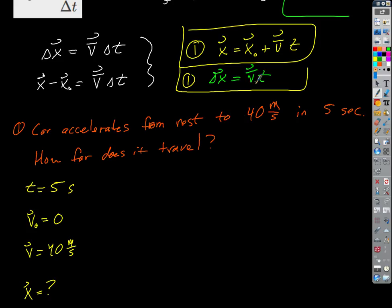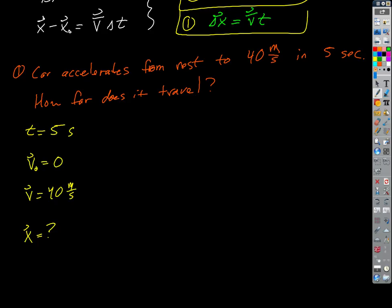We don't have v-bar, but could we find it? V-bar is an average — you add and divide by two. If the car is uniformly accelerating, the speeds are changing regularly. Over that five-second interval, it starts from rest and ends at 40, so what's its average speed? 20 — 40 divided by 2. So we combine these and say v-bar equals 20 meters per second.